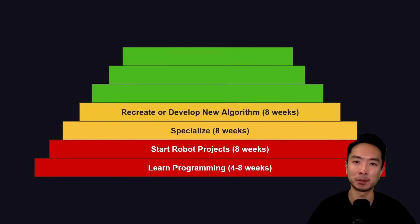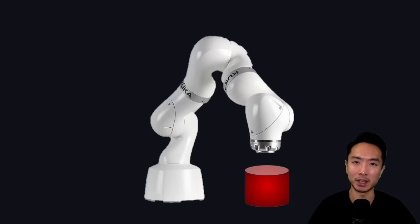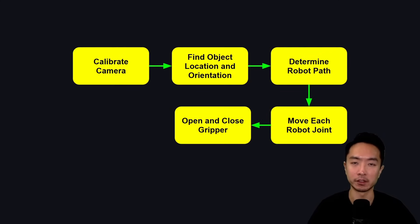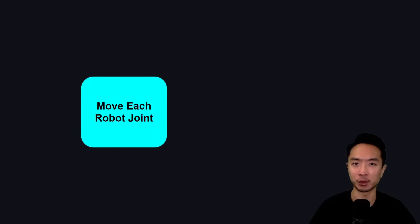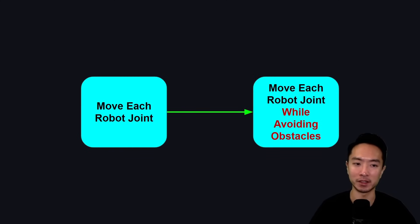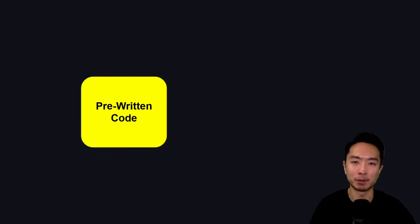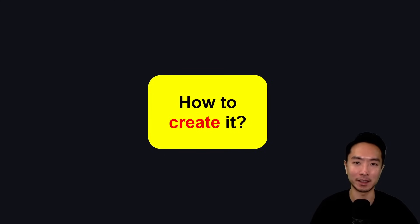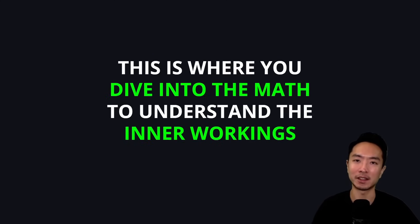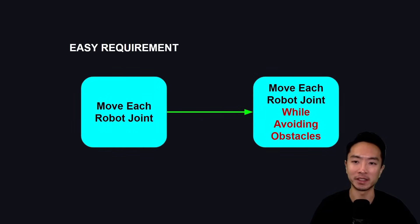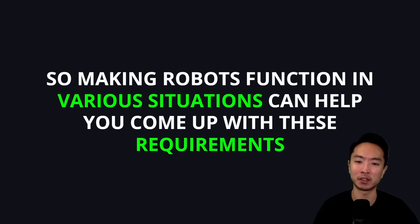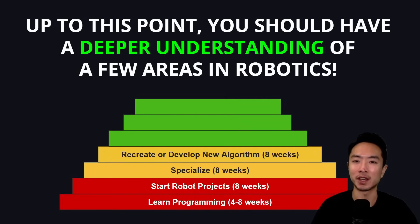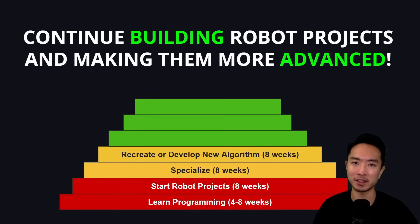The next step is to recreate or develop a new algorithm. Spend about eight weeks here. Adding a twist to our earlier example — let's say there's an object we want to avoid. The requirement changes from just 'move each robot joint' to 'move each robot joint while avoiding obstacles.' Before we were using pre-written code from GitHub, but now we may need to write our own code for something very specific. Before we were asking how to use it; now we're asking how to create it. This is where we dive into the math to understand the inner workings of the algorithms.